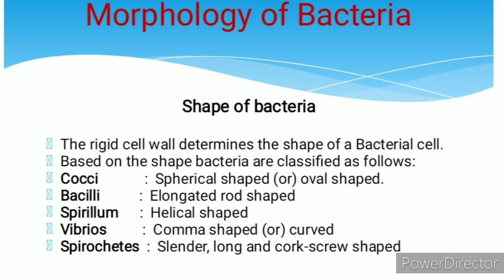Shape of bacteria: on the basis of shape, bacteria are classified as follows. If they are spherical or oval shape, they are called cocci. If they look elongated rod shape, they are called bacilli. Helical shape bacteria are called spirillum.